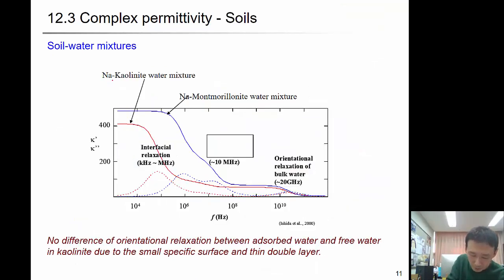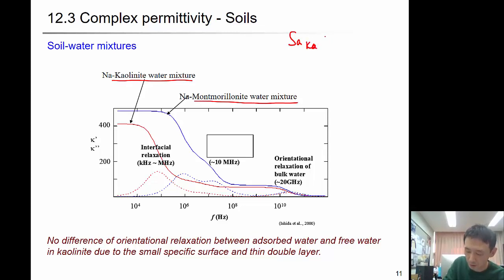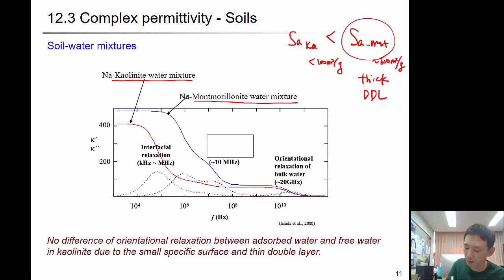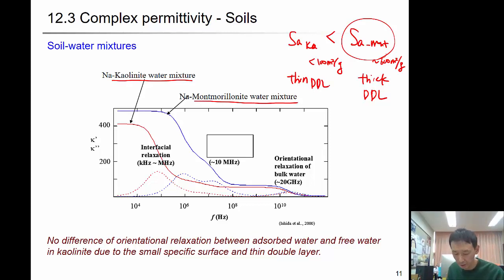Comparing kaolinite-water mixture and montmorillonite-water mixture: the specific surface area of kaolinite is much smaller — less than 100 square meters per gram — while montmorillonite is around 600 square meters per gram. The liquid limit is also really high for montmorillonite, which has a thick double diffuse layer, while kaolinite has a thin double diffuse layer. This makes a significant difference.